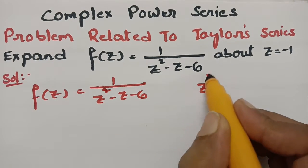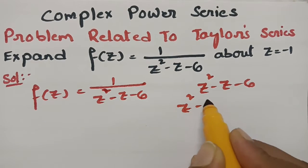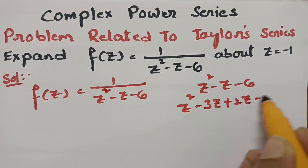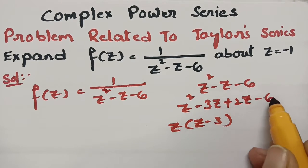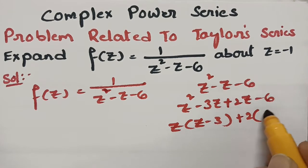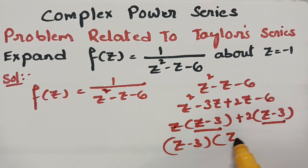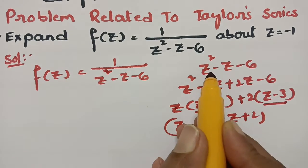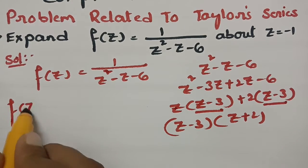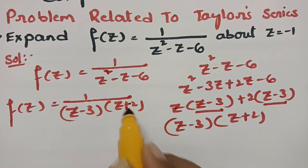If I take factors out of z² - z - 6, the middle term minus z can be written as minus 3z plus 2z. Taking z common from the first two terms gives z minus 3, and taking 2 common from the remaining terms also gives z minus 3. So taking z minus 3 as a common factor, what remains is z plus 2. Therefore f(z) = 1/[(z - 3)(z + 2)].